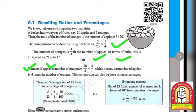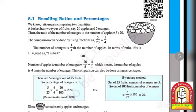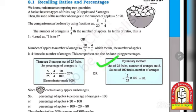So the number of oranges is 1/4 the number of apples, which in ratio form is 1:4. Alternatively, the number of apples to the number of oranges is 20 upon 5, which is 4 upon 1 – meaning the number of apples is 4 times the number of oranges.